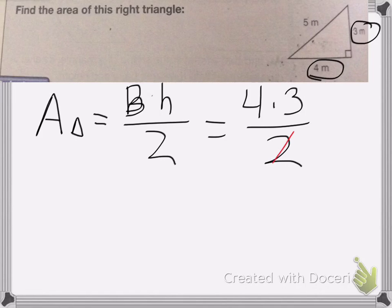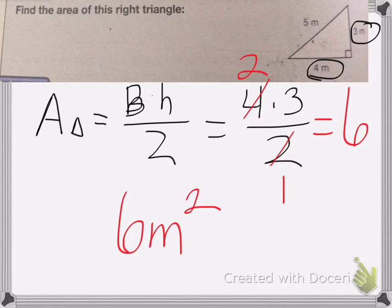Again, I can cancel, 2 becomes a 1, 4 becomes a 2, 2 times 3 is 6, so my area is 6 meters squared. And that's all, good luck on your homework!